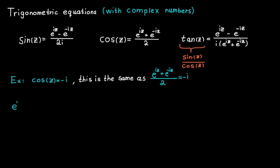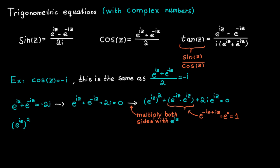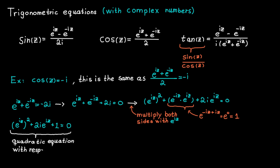We start by multiplying both sides by two, then add 2i to both sides, and lastly multiply both sides by e to the ic. The second term simplifies because e to the minus ic plus ic equals e to the 0, which is 1. The equation now becomes clearer, and it is indeed a quadratic equation with respect to e to the ic.